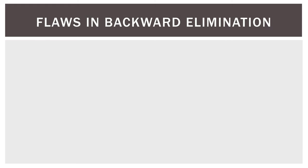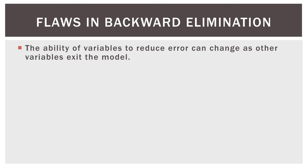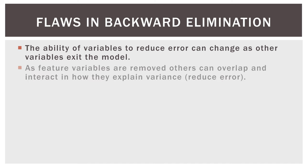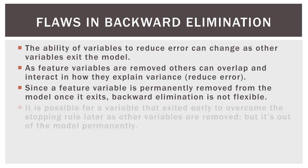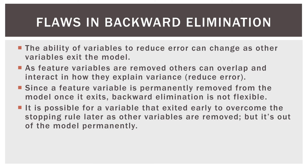Just like forward selection, backward elimination does have some flaws to it. The ability of variables to reduce error can change as other variables exit the model. As feature variables are removed, others can overlap and interact in how they explain variance, or on the flip side, how they reduce error or don't reduce error. Since a feature variable is permanently removed from the model once it exits, backward elimination is not flexible. It is possible for a variable that exited early to overcome the stopping rule later as other variables are removed, but it's out of the model permanently.